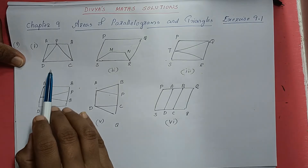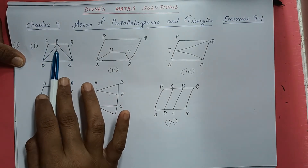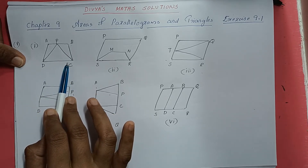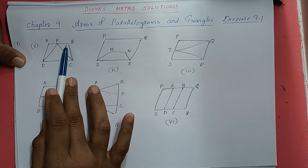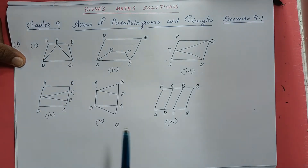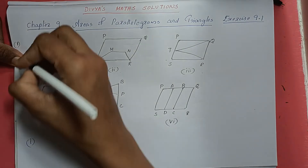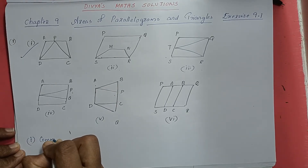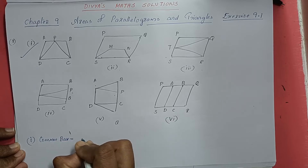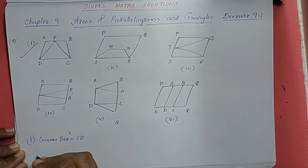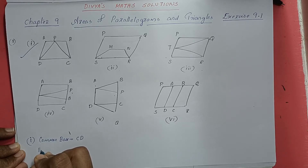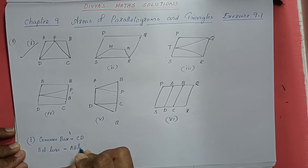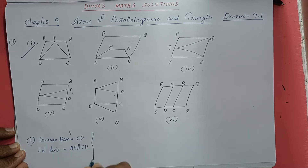First figure: here we have trapezoid ABCD and one triangle TCD. Both figures are on the same base. The base is DC, and the same parallels — AB and DC are parallel to each other. So the first figure lies on the same base and the same parallels. Common base is CD, and parallel lines: AB is parallel to CD.